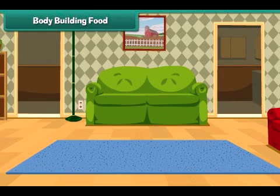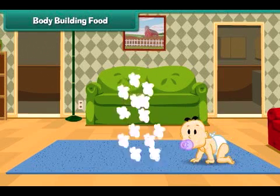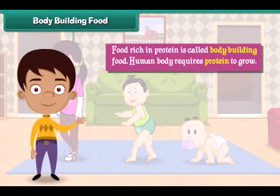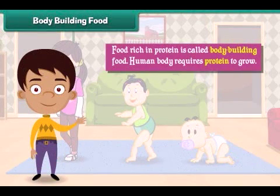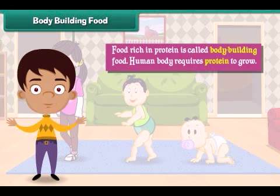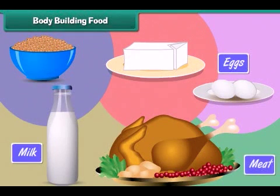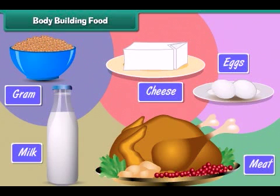Body building food. The human body needs protein rich food to grow. Food rich in protein is called body building food. Milk, eggs, meat, cheese and gram are examples of body building food.